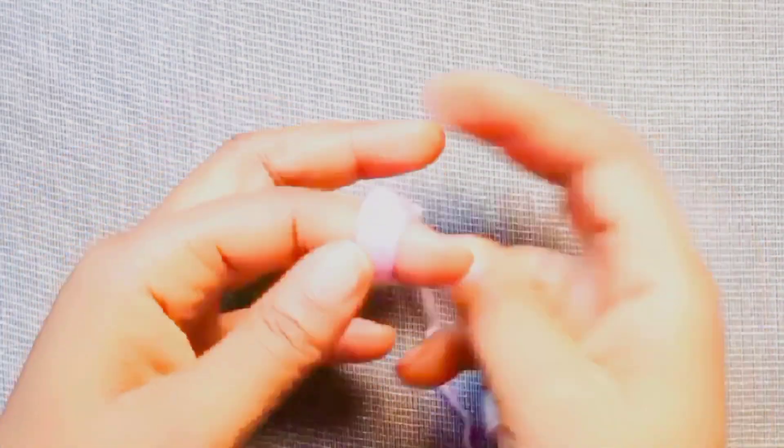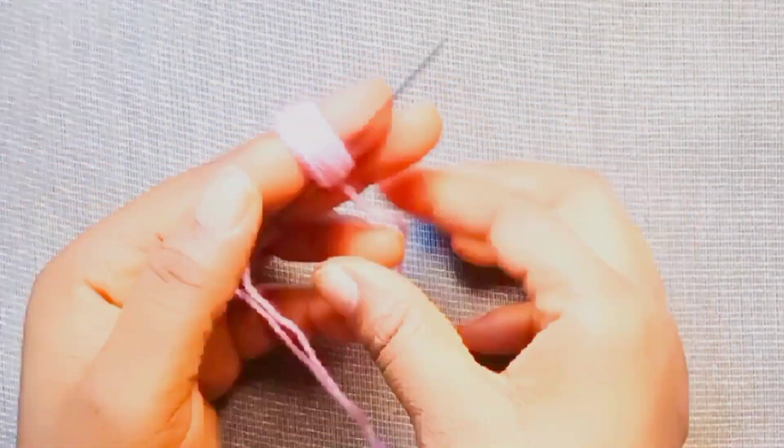Attach the needle at the extension of the wool and use it to sew around the wool on the finger.